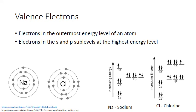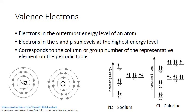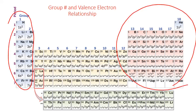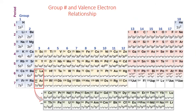There's one last way that we can predict the number of valence electrons for any atom. It turns out that that number corresponds to the column or group number of the representative elements on the periodic table. The representative elements are found in columns 1 and 2, and 13 through 18. Every element in column 1 just has one electron in that outermost energy level found in the S sublevel, so every element in column 1 has one valence electron.